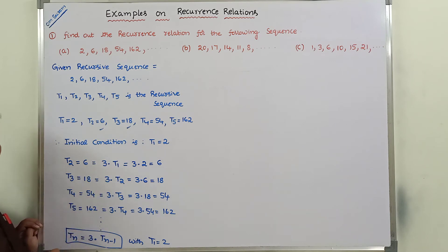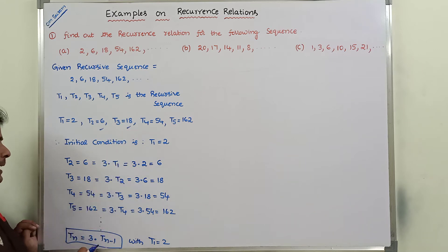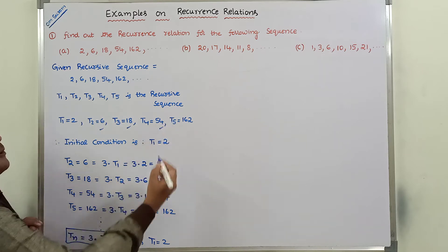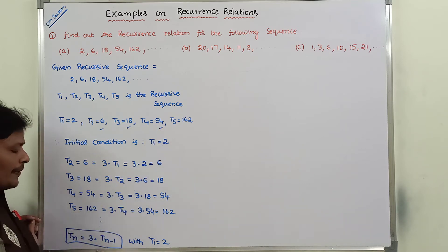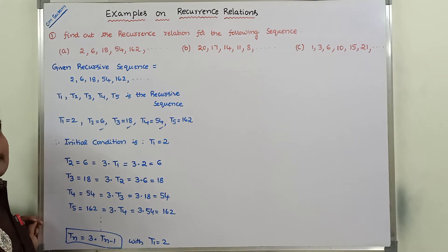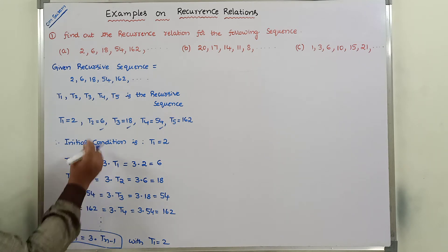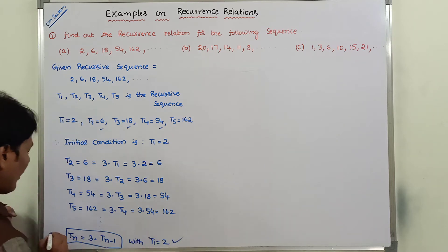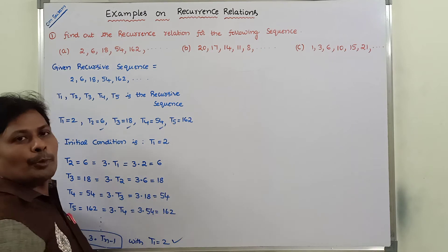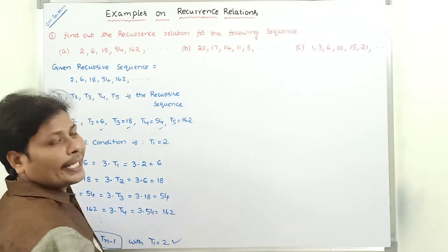For T4: substituting n = 4, T4 = 3 × T3 = 3 × 18 = 54. For T5: T5 = 3 × T4 = 3 × 54 = 162. So this is the final recurrence relation Tn = 3 × T(n-1) with initial condition T1 = 2 for the given recursive sequence.